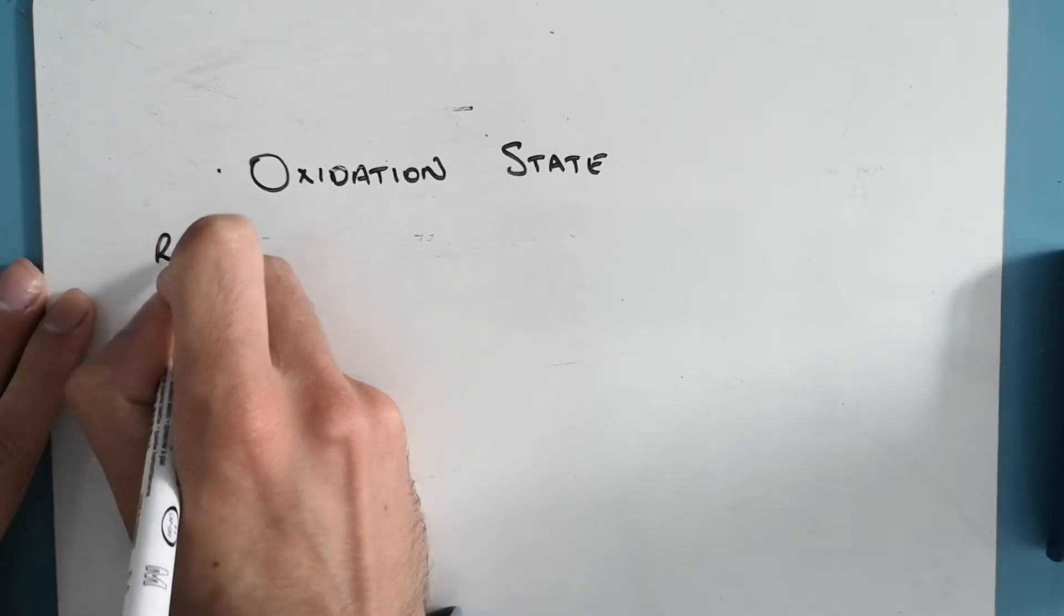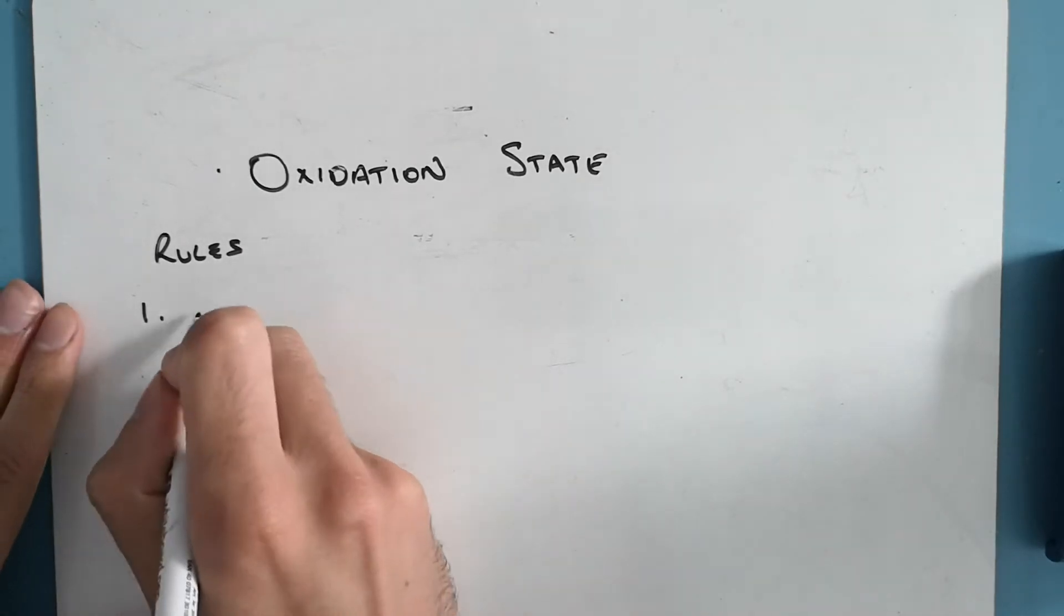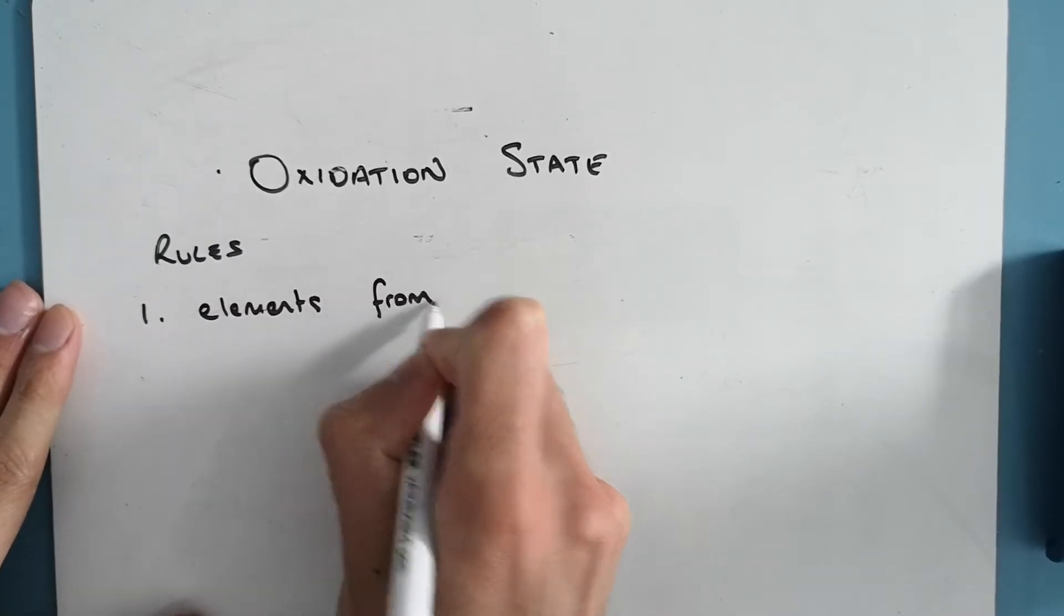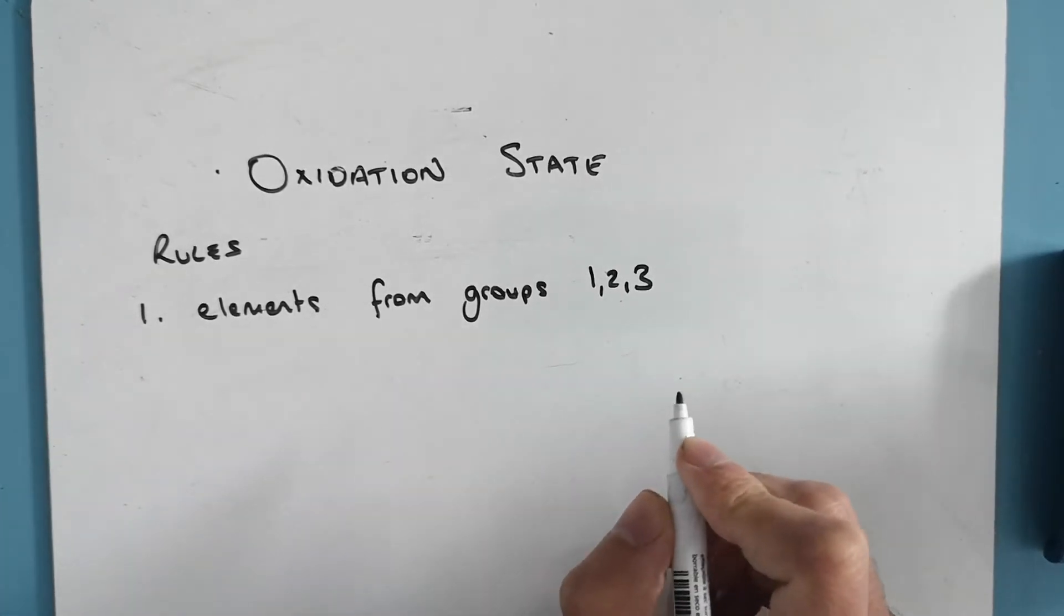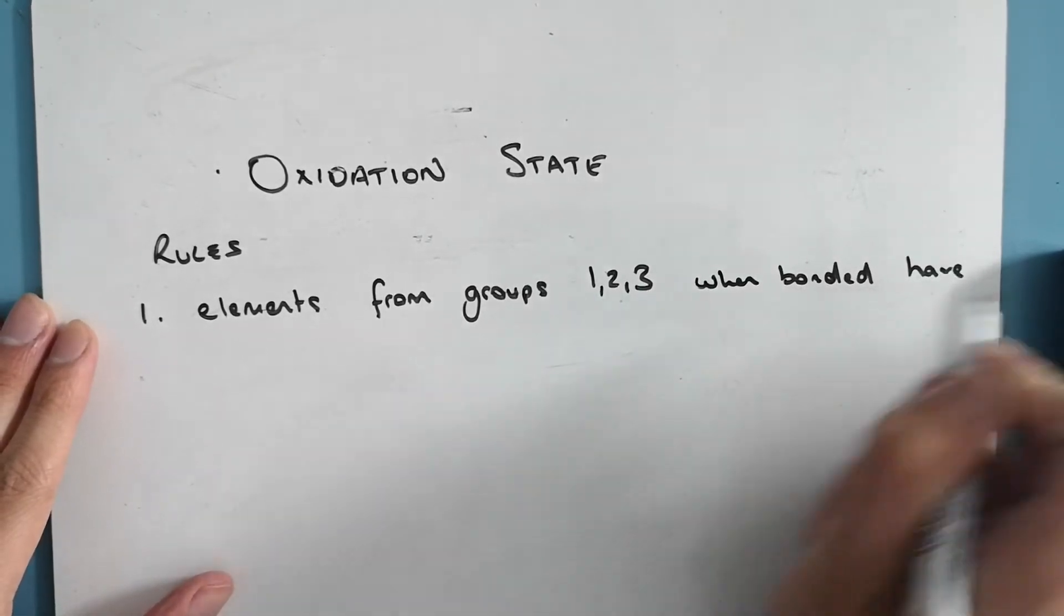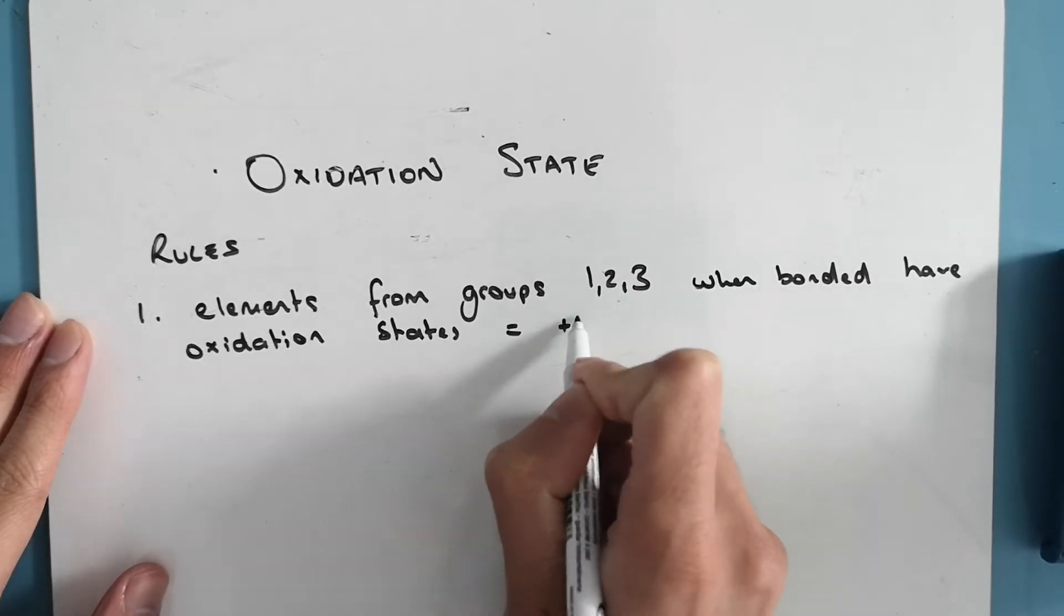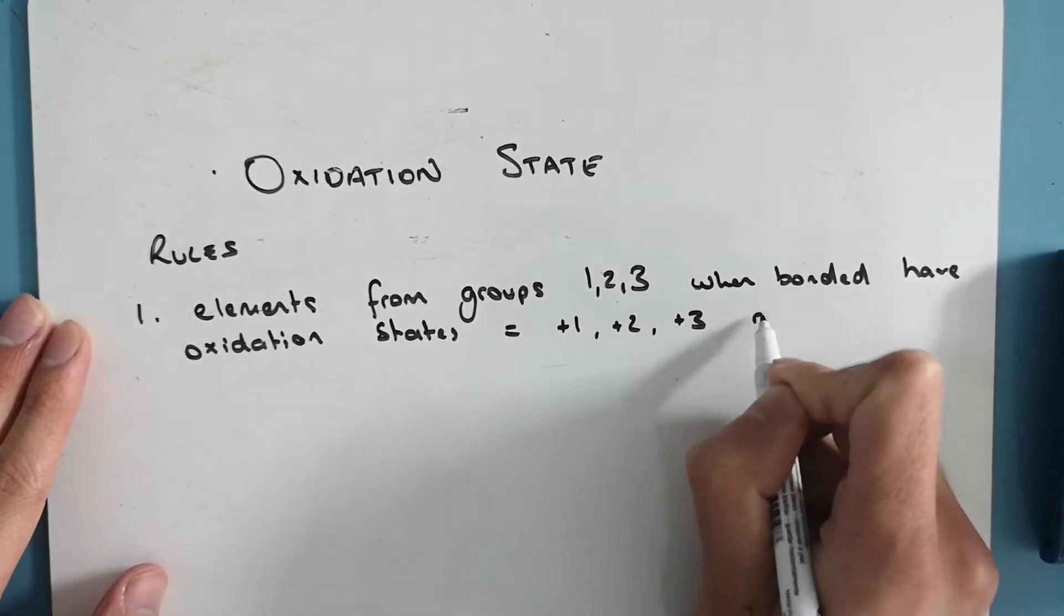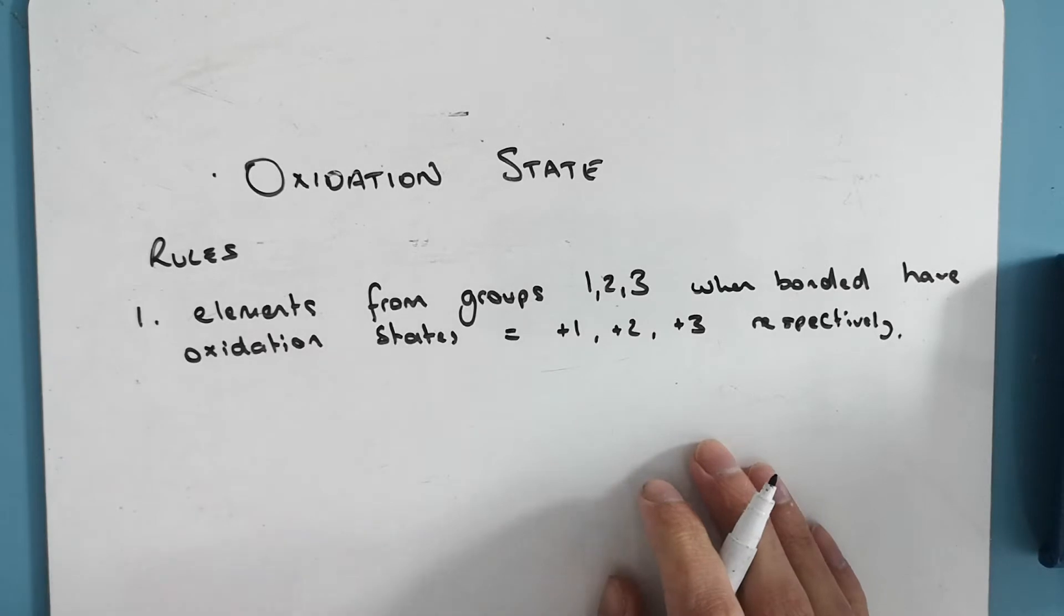So we've got a set of rules we need to follow. Now, different textbooks will give you different sets of rules, but I'm going to go through the important ones. Elements from groups one, two, and three, when bonded, have oxidation states equal to plus one, plus two, plus three, respectively. So group two will have plus two, group three plus three, group one plus one.